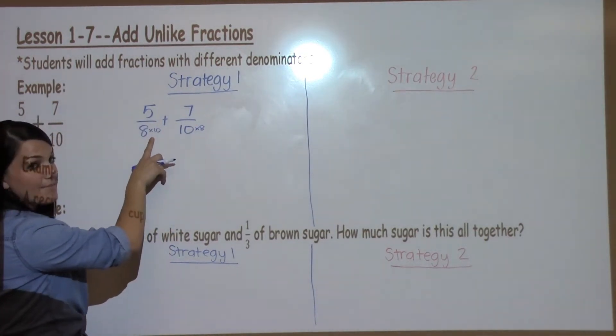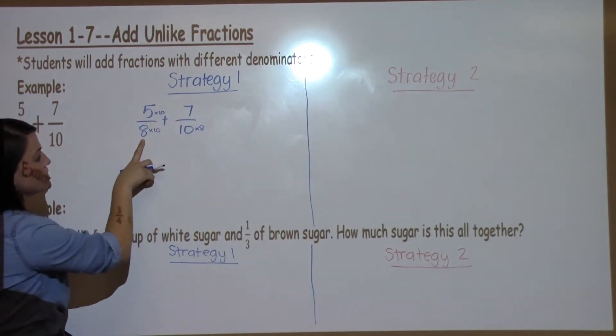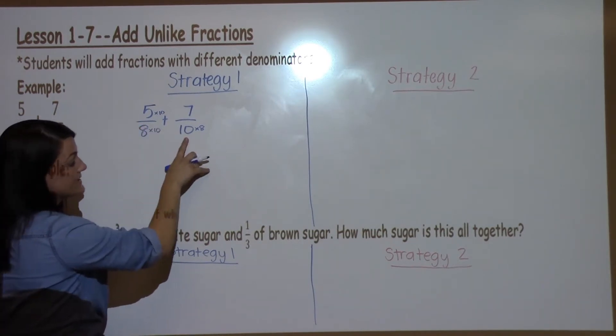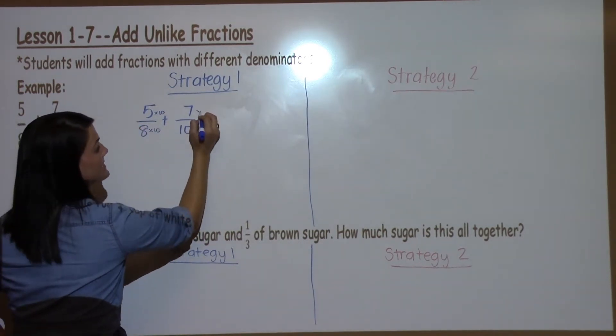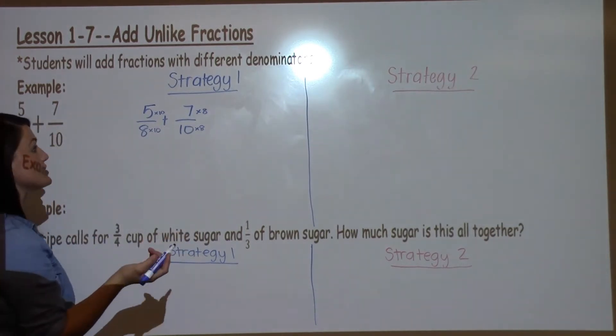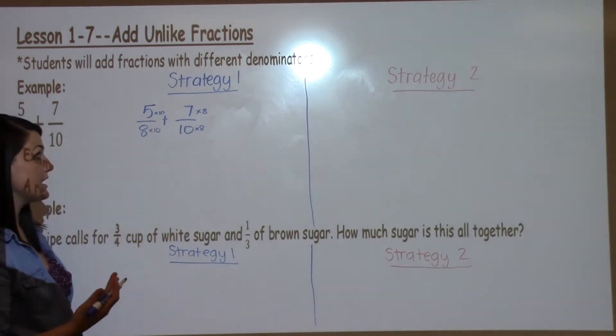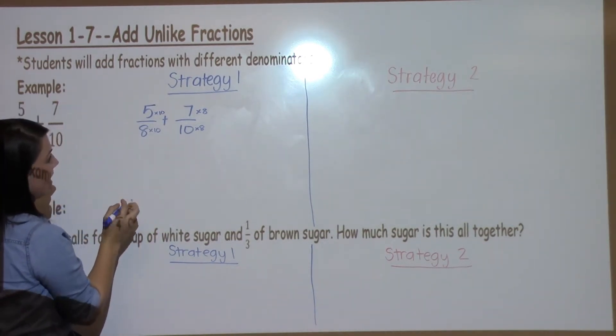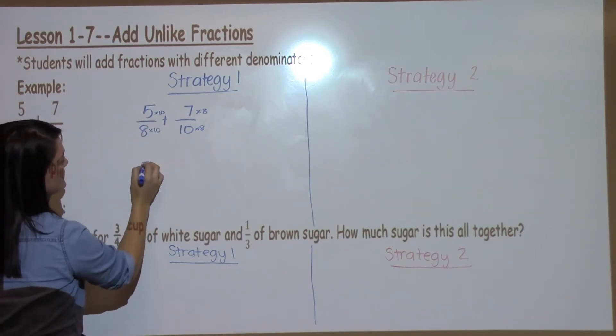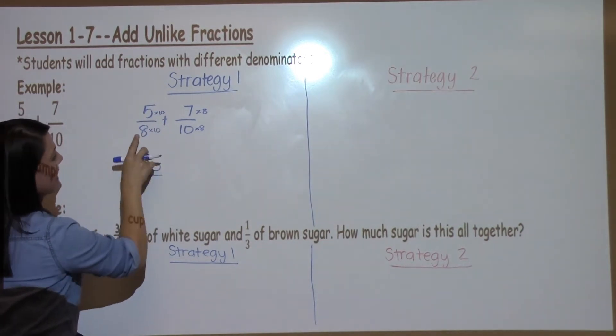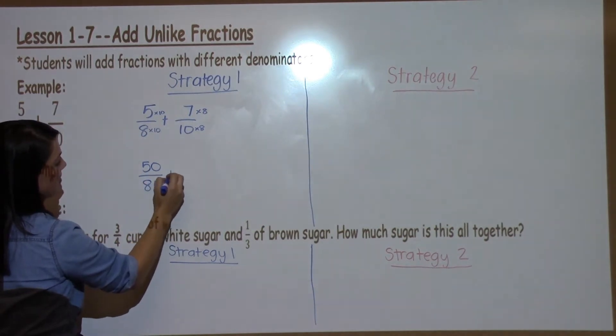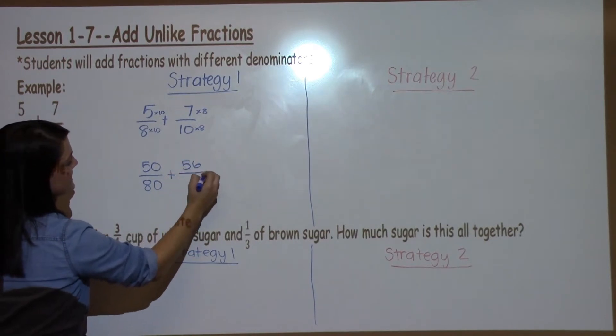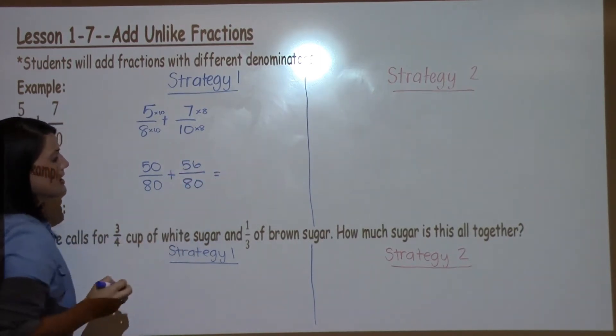Anything I do to the bottom of a fraction, I always have to do to the top. So if I'm going to take 8 times 10, then I have to take 5 times 10. If I'm going to take 10 times 8, then I have to take 7 times 8. So now I'm creating different looking fractions, but they're still equivalent to the original fractions. 5 times 10 is 50, 8 times 10 is 80. 7 times 8 is 56, 10 times 8 is 80.